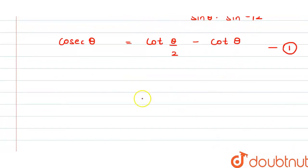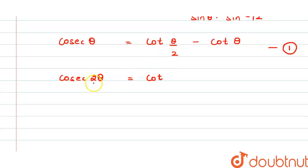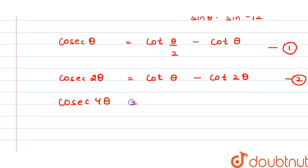Now, if we take θ as the angle, this is half of θ and this is θ. If I write this for cosec 2θ, then half of 2θ will be θ. So this will be cot θ − cot 2θ. This is my second equation. Now, for cosec 4θ, half of 4θ will be 2θ, so this will be cot 2θ − cot 4θ. This is my third equation.